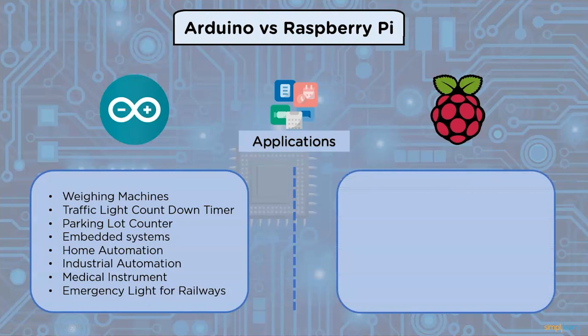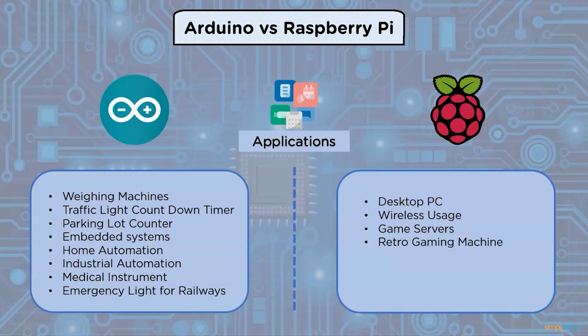Raspberry Pi is used in desktop PCs, wireless applications, game servers, retro gaming machines, robot controllers, stop motion cameras, and time-lapse cameras.